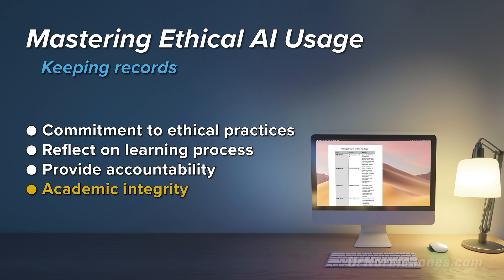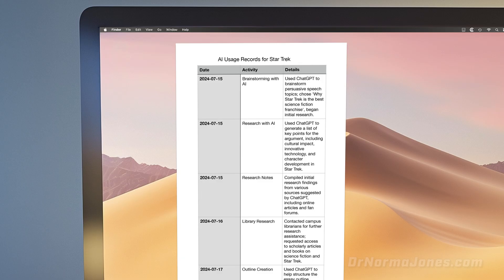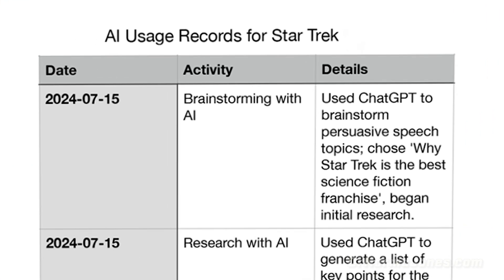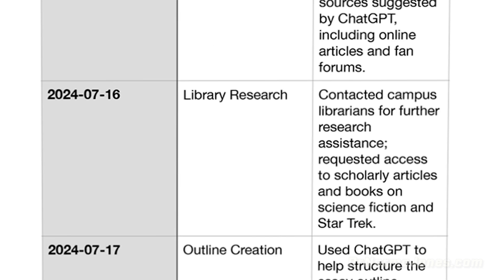Lastly, keeping a record of your AI usage enhances academic integrity. It shows that you're not trying to hide the fact that you used AI tools, but rather, you're integrating them into your work. One way to keep records is by jotting down dates along with how you used AI. For example: 'July 15 — used ChatGPT to brainstorm persuasive speech topics. Chose one: why Star Trek is the best science fiction franchise. Began research.' Then, I can add how I contacted the campus librarians to help me better research the topic.